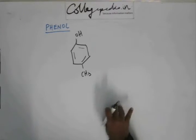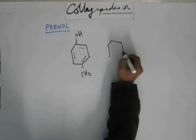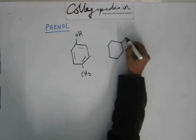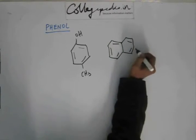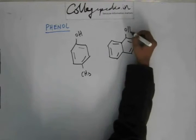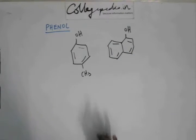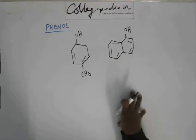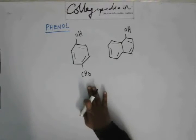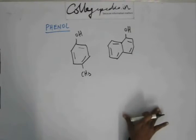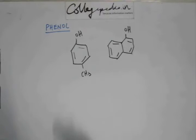That aromatic ring need not necessarily be benzene, it can be benzene derivatives as well. It can be naphthalene - if you have an OH group on naphthalene, that is also phenol. So phenols are compounds having a hydroxy group on aromatic rings: that aromatic ring can be benzene, substituted benzene, or benzene derivatives.